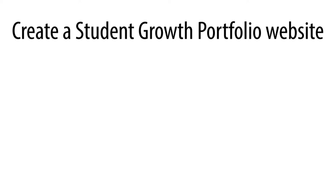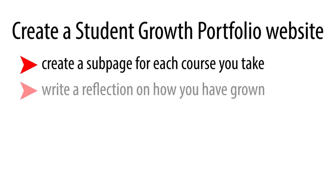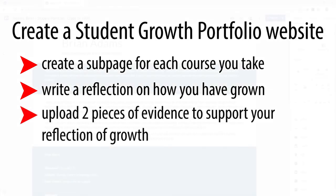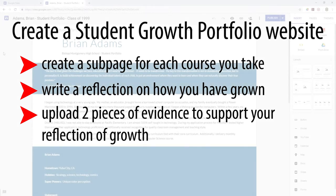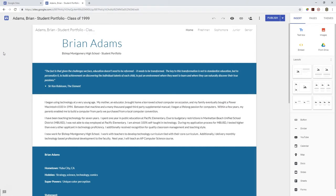Students, hello. You have a job each semester: your task is to create a web page for each course you take at BMHS. On that web page you will discuss how you've grown as a student, then upload documents, pictures, or whatever evidence you have to support your claims of growth. You're going to make one web page for each course, one write-up of about two to three paragraphs, and upload two pieces of evidence to support your claims of growth.